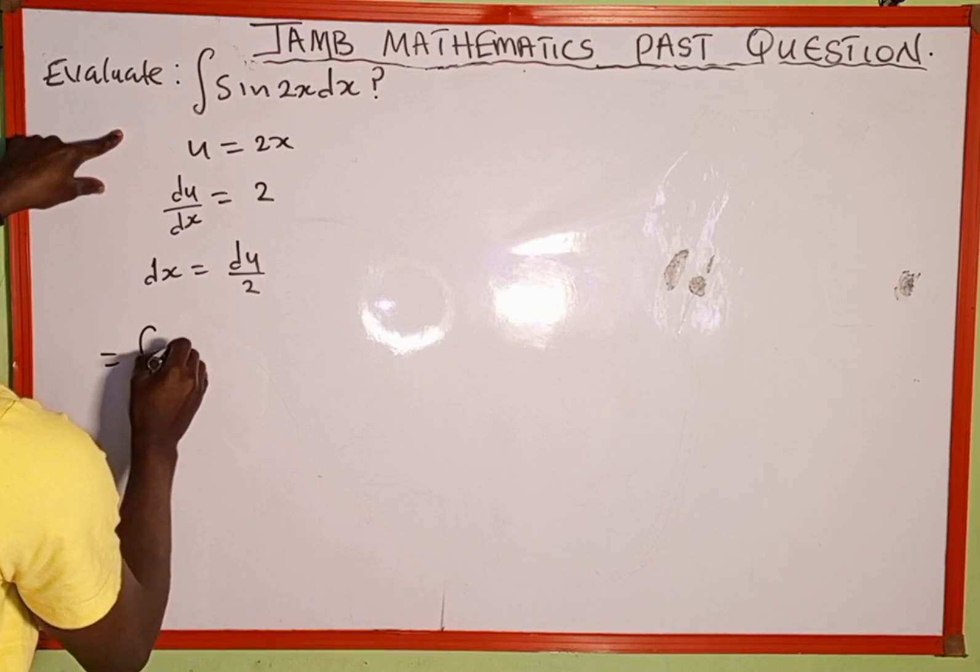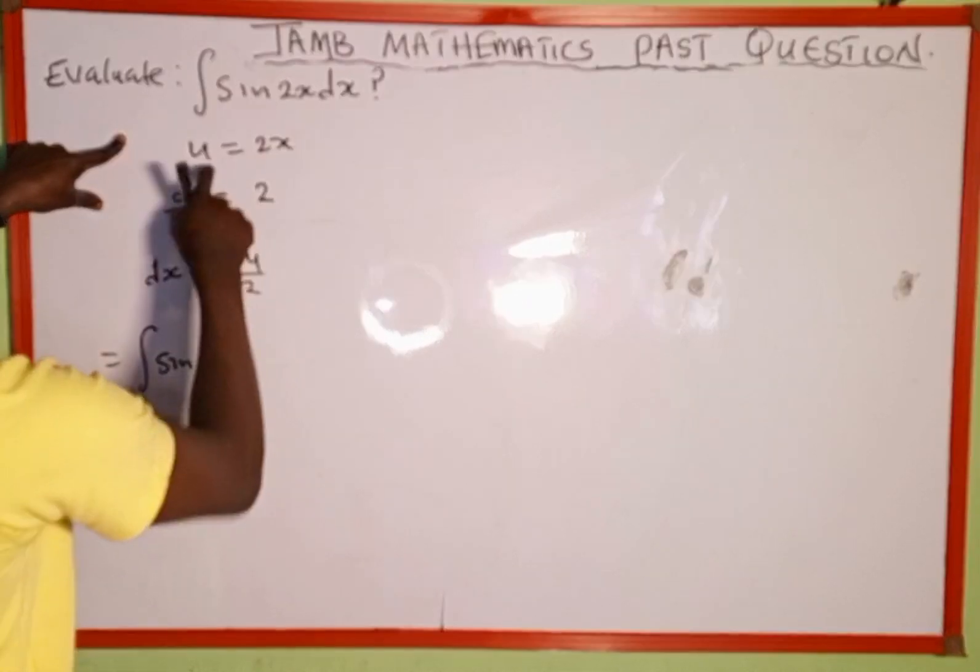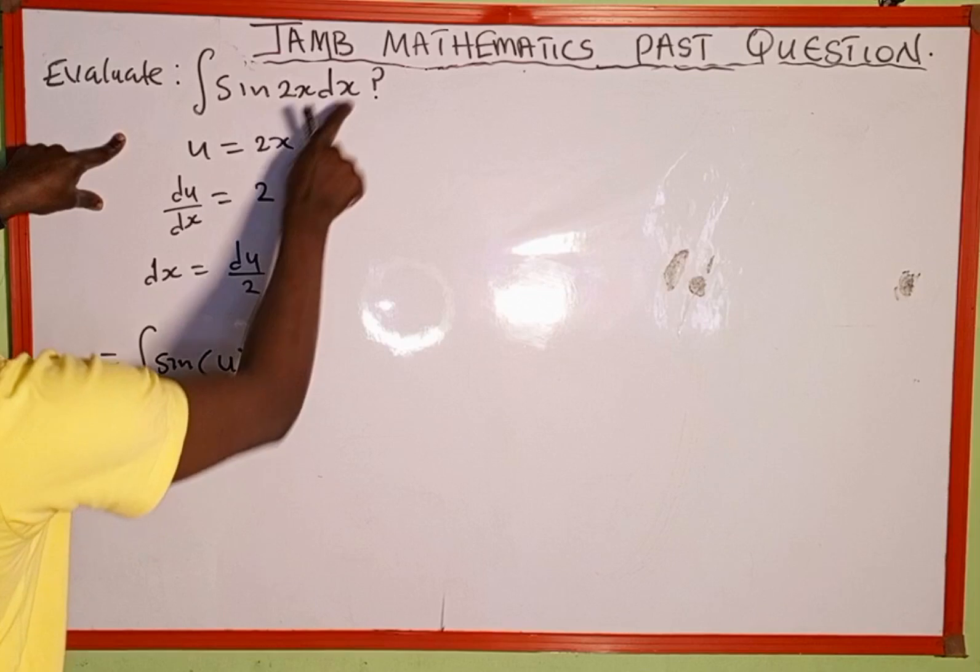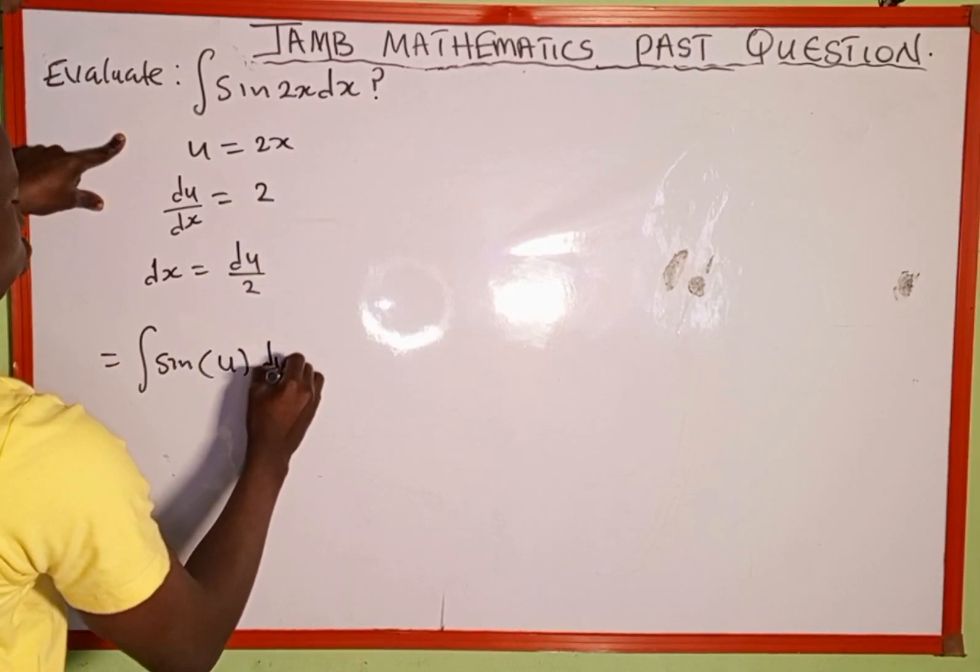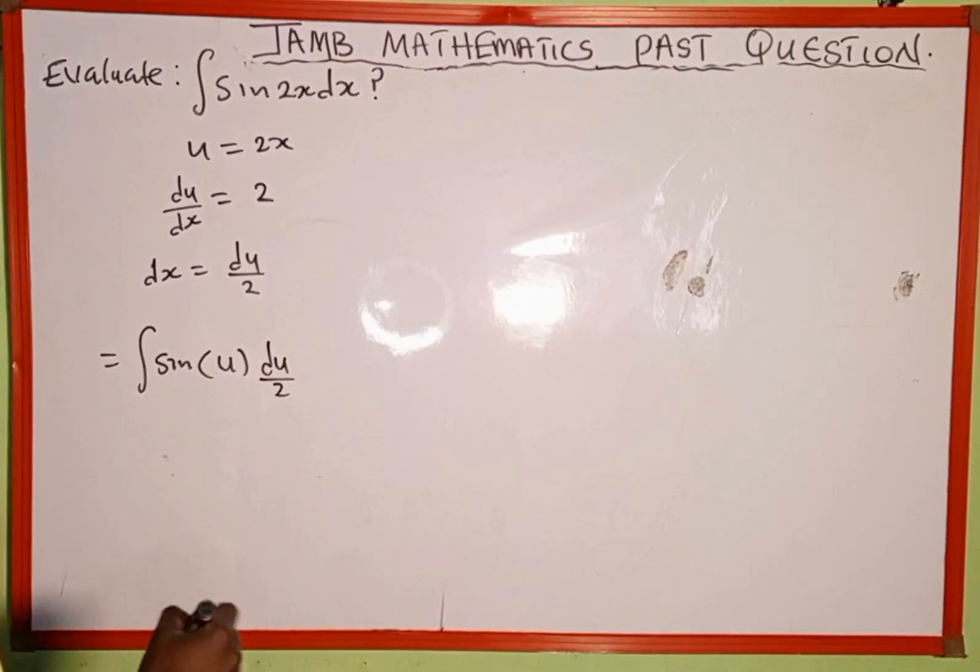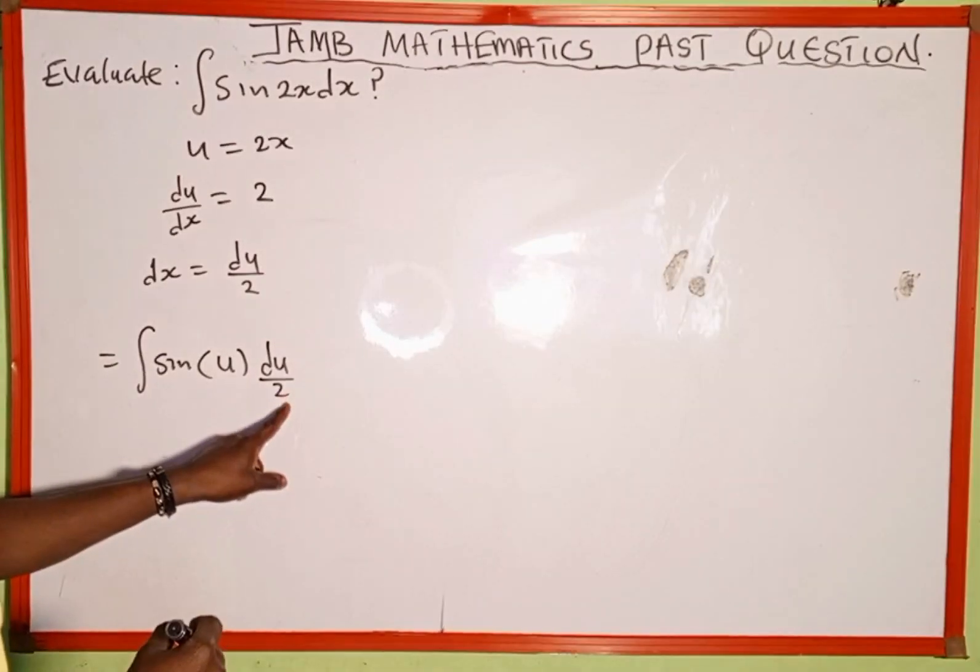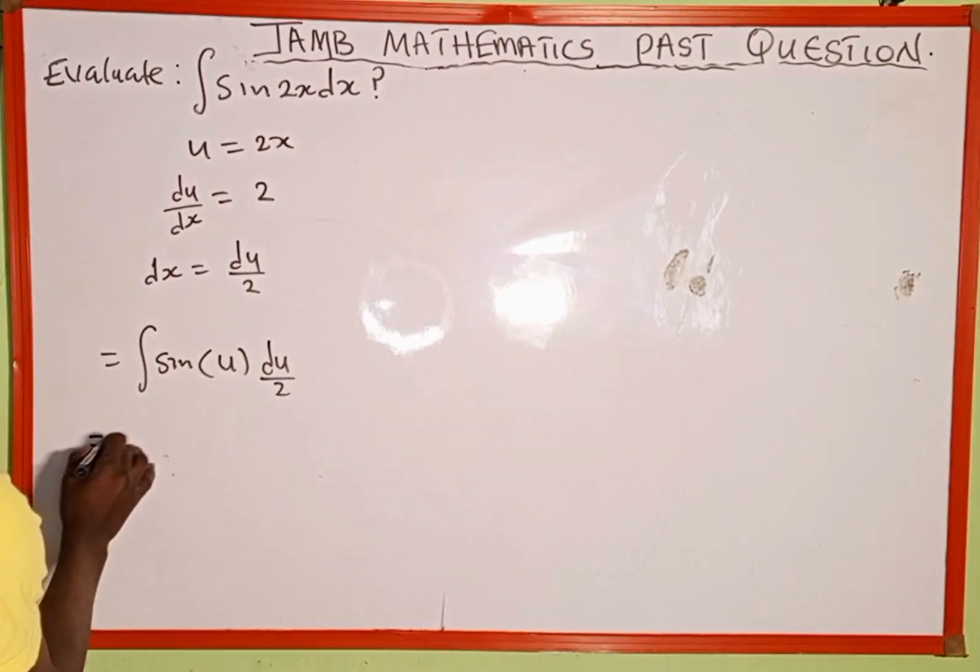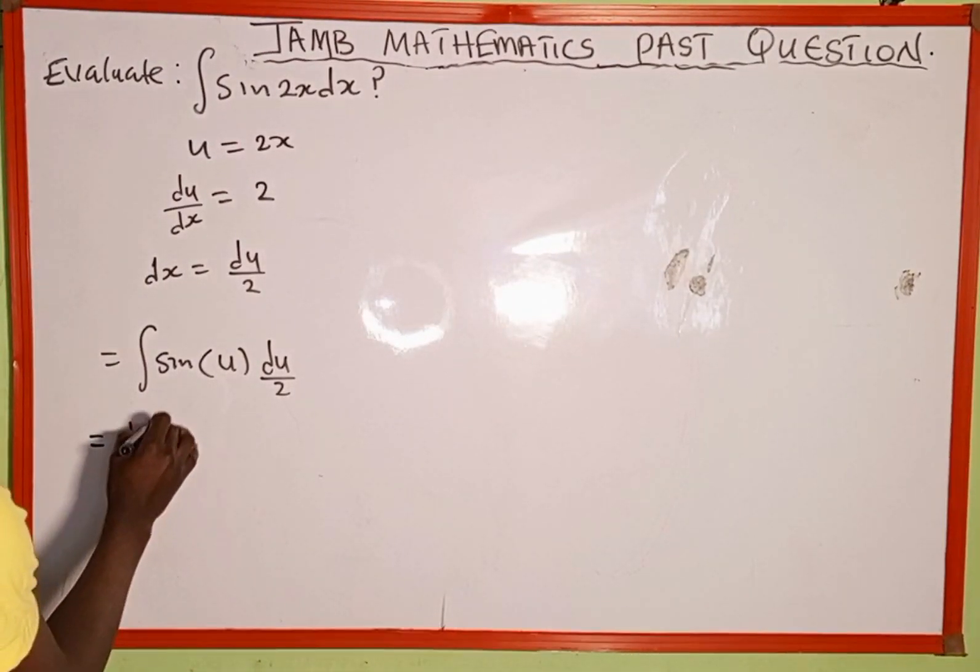So this is going to be the integral of sine of u, and in place of dx we'll replace with du over 2. As you can see, this 2 here is a constant, so we're going to take it out. This is going to be 1 over 2, then integral of sine u du.